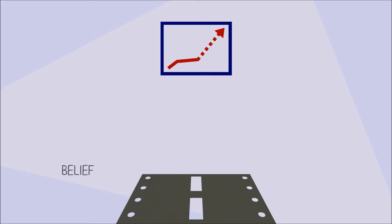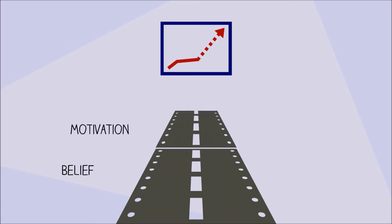To crush impossible problems and make large step changes in performance, you need three things in your organization: the belief that more opportunity exists, the motivation to go after it, and the capability to deliver results.